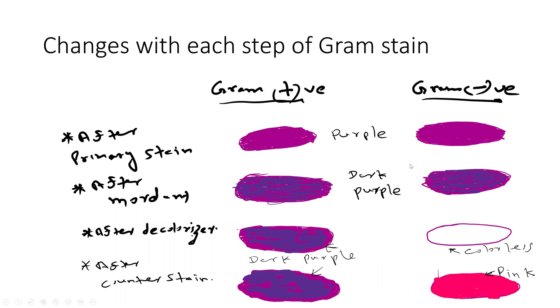After the decolorizer — the third step — you can see gram positive bacteria are dark purple and gram negative bacteria are colorless.